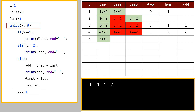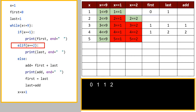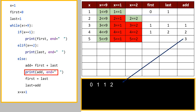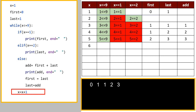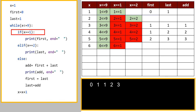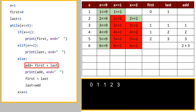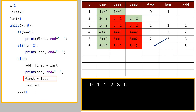x becomes 5. 5 is less than equal to 9 — yes. 5 equal equal to 1 — no. 5 equal equal to 2 — no. Add gets value 1 plus 2 equals 3. The value 3 is displayed on the output screen. First gets 2 and last gets 3. Value of x becomes 6. 6 is less than equal to 9 — yes. 6 equal equal to 1 — no. 6 equal equal to 2 — no. Value of add is 2 plus 3, which becomes 5, and 5 is displayed on the output screen. Value of first becomes 3.